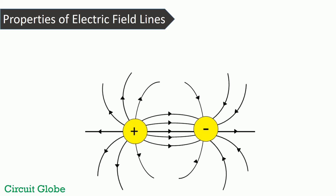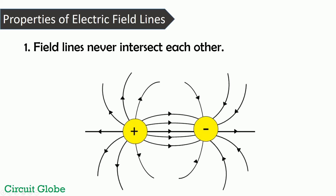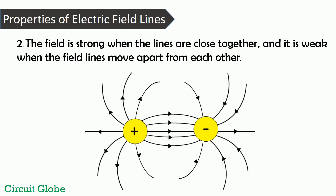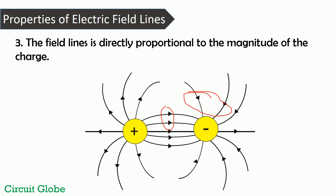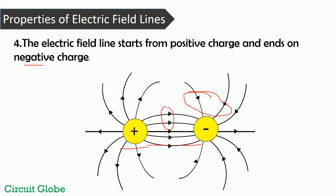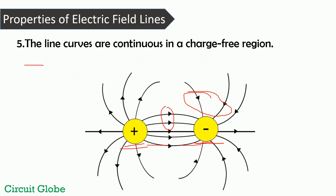The electric field is represented by electric field lines, which have specific properties. First, field lines never intersect each other. Second, when lines are close together the field strength is high, and when they are apart the field strength is low. Third, the number of field lines is directly proportional to the magnitude of the charge. Fourth, field lines always start from the positive charge and end on the negative charge. Fifth, the lines are continuous in a charge-free region.